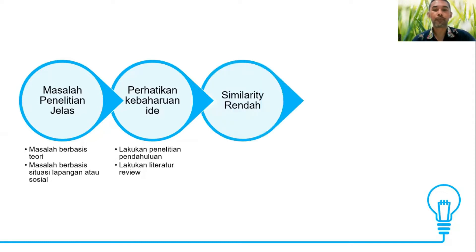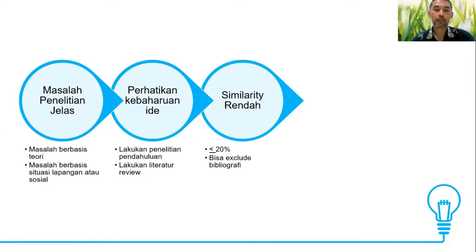Untuk menghindari plagiarisme, kita harus perhatikan bahwa similarity harus rendah dalam proses menulis artikel, sebaiknya kurang dari 20%. Kita bisa exclude bibliografi, tetapi kita perlu memperhatikan hal ini ketika kita melakukan literatur review.